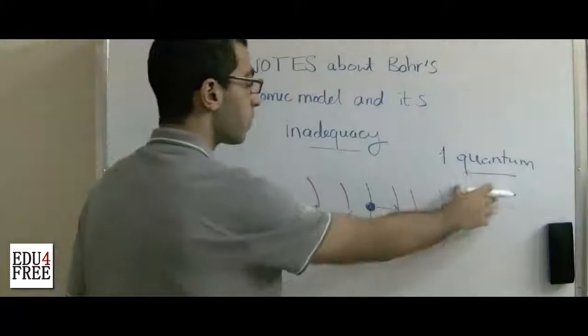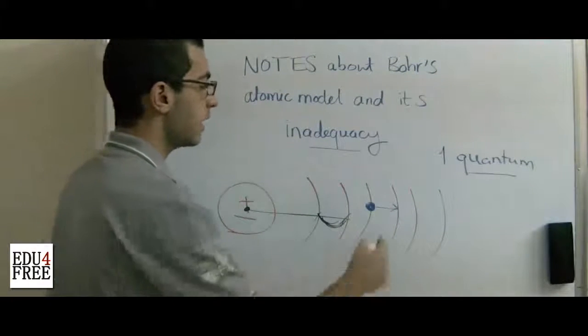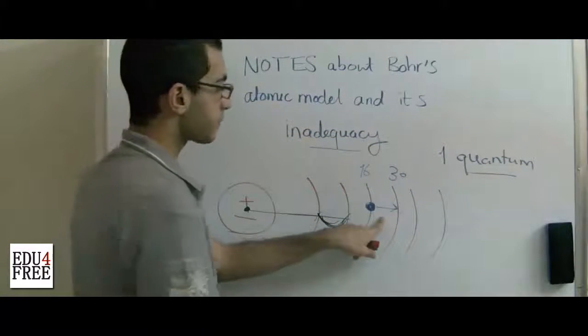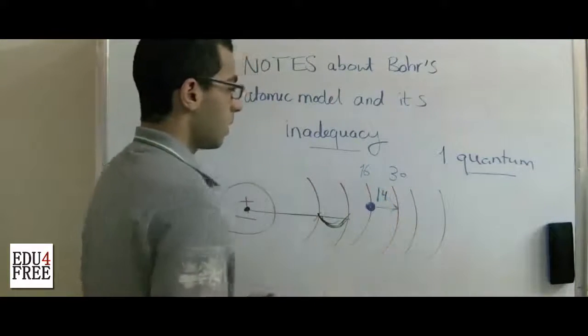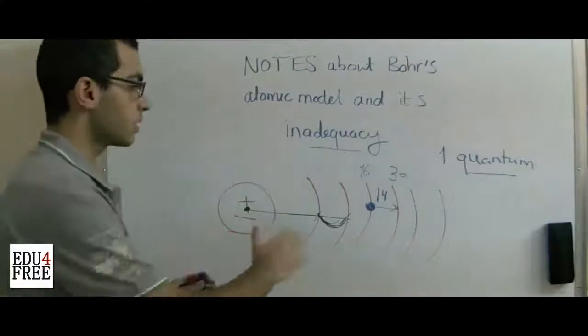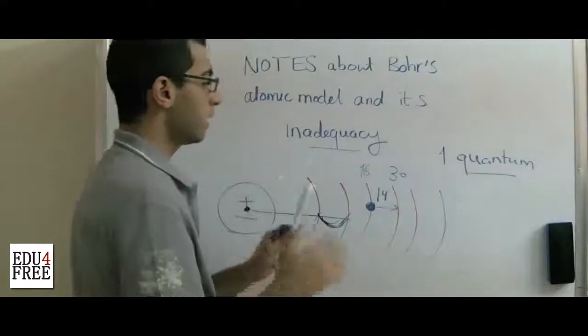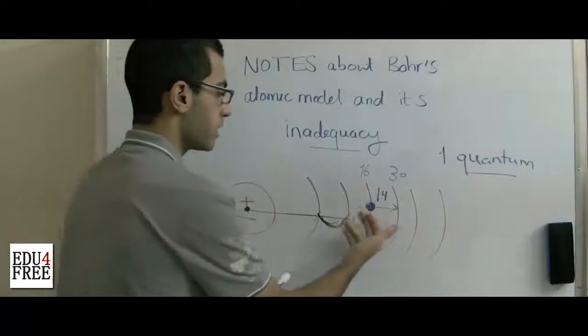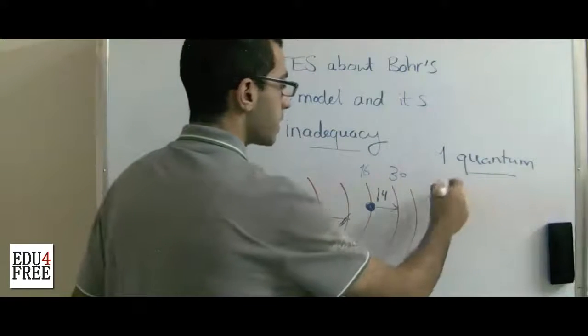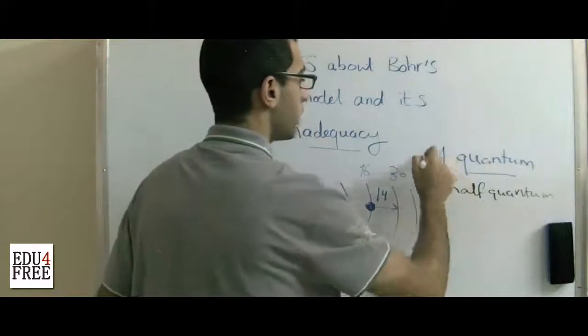This quantum equals the difference between the energy of this energy level and this one. So if this was 30 and this was like 16, the quantum will be 14. And in any other conditions, the electrons won't move from one energy level to another. So if this was 7 or 8, this is impossible for the electron to move from this energy level to that one. And there is nothing called half quantum.